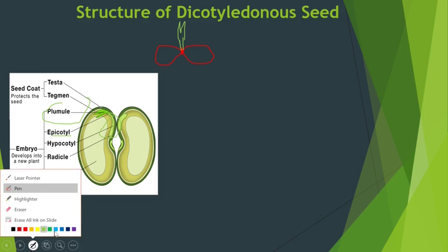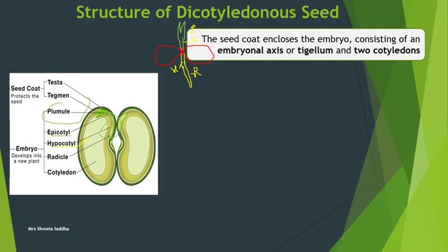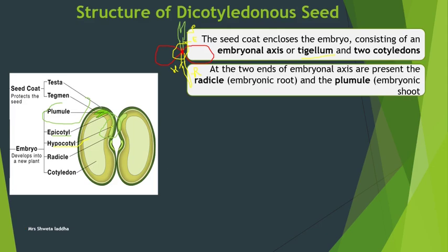Below the embryonic axis is the hypocotyl - you can see in the picture this lower portion is the hypocotyl. Hypocotyl gives rise to the radicle, and the radicle forms the root. Hypo means below, so hypocotyl is below the cotyledon, and epicotyl is above the cotyledon. The part of the embryonic axis between the radicle and the first node is the hypocotyl, and the part between the plumule and the first node is the epicotyl, which gives rise to the plumule.